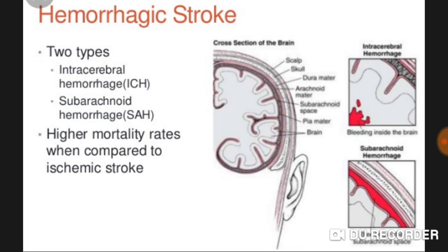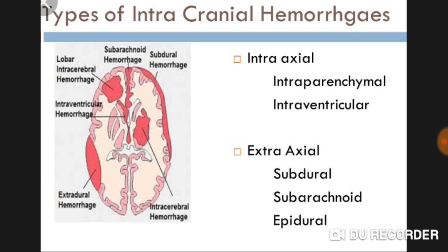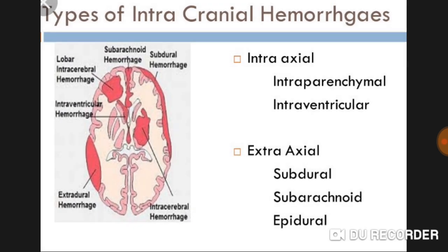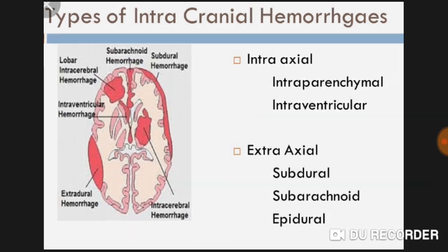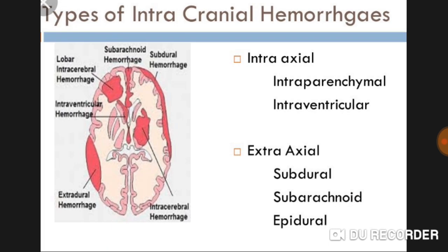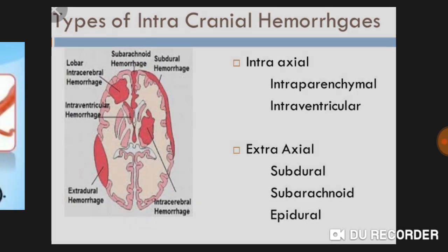Let's discuss more types of intracranial hemorrhages. They include intra-axial — which covers intraparenchymal and intraventricular — and extra-axial, which includes subdural, subarachnoid, and epidural. These are visible in the diagram in front of you. You can see subarachnoid, subdural, and intracerebral types. My patient has intracerebral hemorrhage.